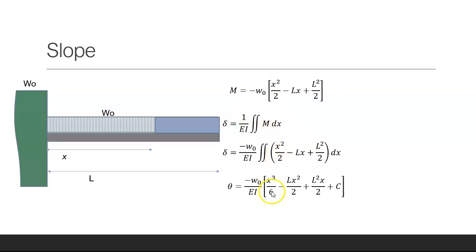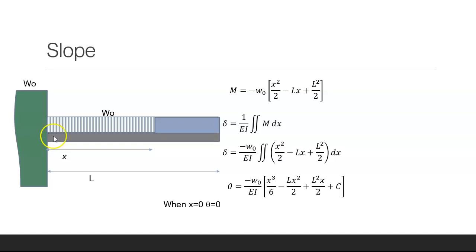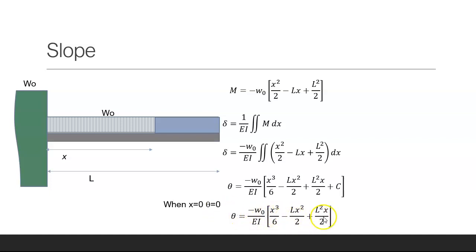When I integrate the first time I get x cubed over 6 minus Lx squared over 2 plus L squared x over 2 plus a constant of integration C. When x equals zero the deflection and the slope of that deflection are both equal to zero, so C equals zero. That is the equation for the slope of the deflection.